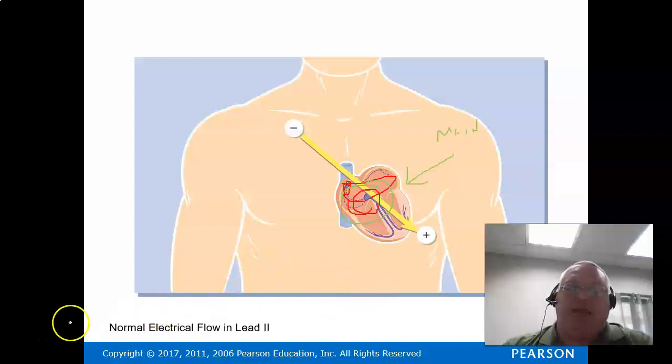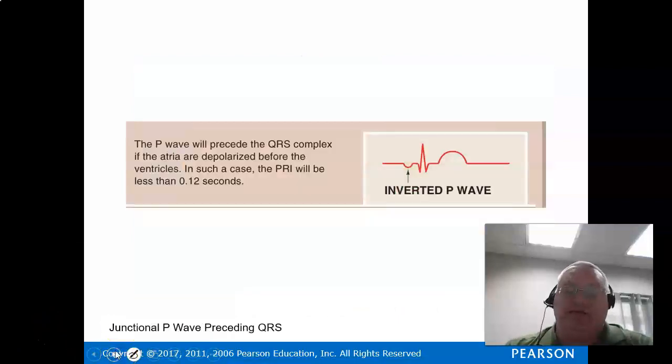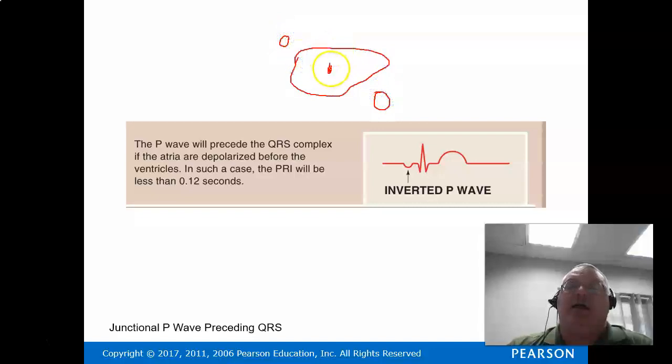We're going to talk about some of the differences with the rates in which they go. Let's move on to some of the rhythms that we're going to get with this. The biggest thing that you're going to see with a junctional rhythm is the inverted P wave.